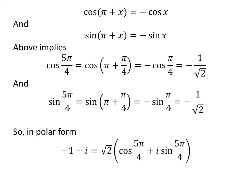The polar form of complex number minus 1 minus i is square root of 2 times cosine of 5 times pi upon 4 plus i times sine of 5 times pi upon 4.